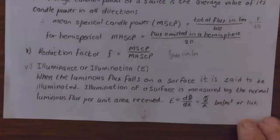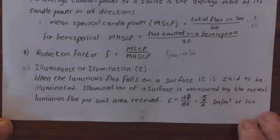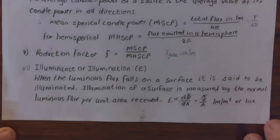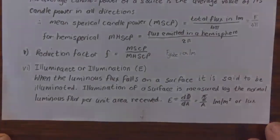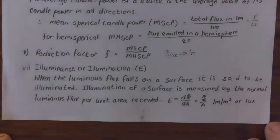The illuminance or illumination E: when the luminous flux falls on a surface, it is said to be illuminated. Illumination of the surface is measured by the normal — meaning perpendicular — luminous flux per unit area received. E = dφ/dA, or flux divided by area, which gives lumens per square meter, or lux.